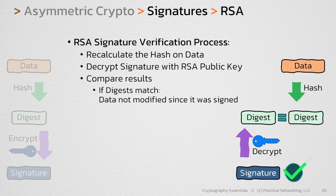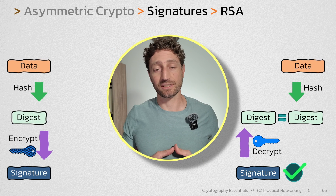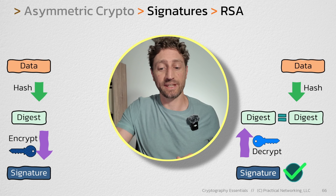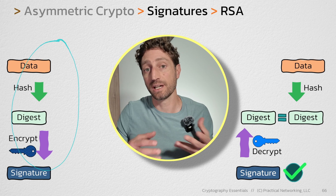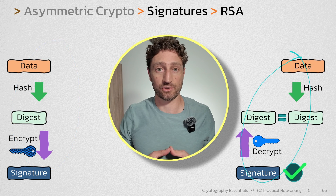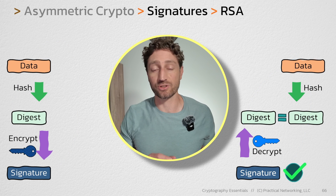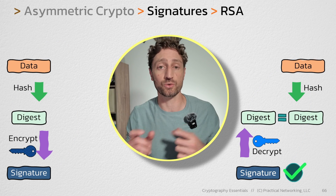That is the process that RSA uses to verify a signature. So that wraps up our lesson on RSA signatures. The main takeaways are understanding how RSA creates a signature and how RSA verifies a signature. In the next lesson, we'll be looking at DSA, which is a different algorithm that can also do signatures.